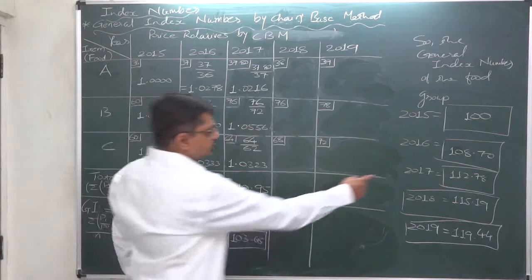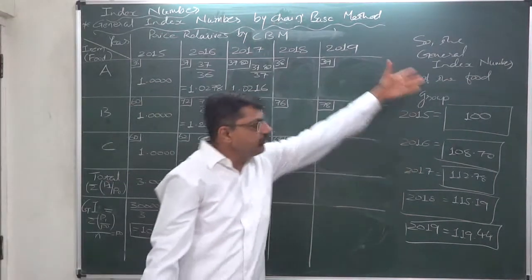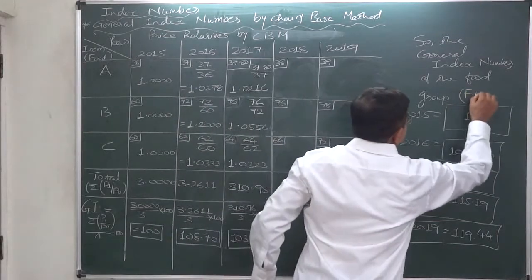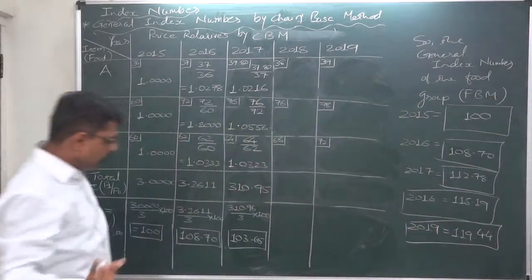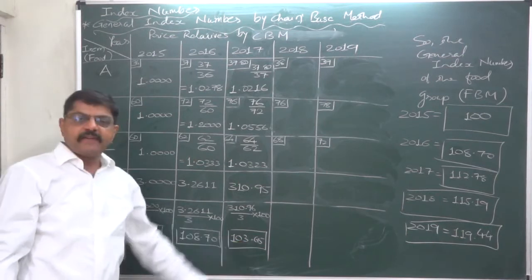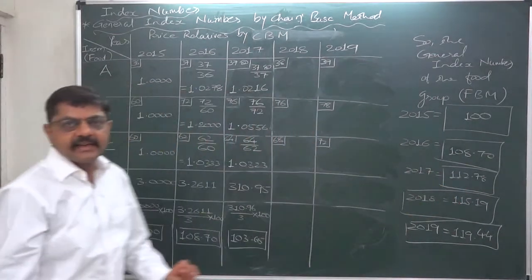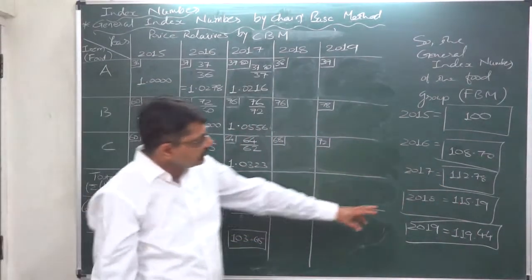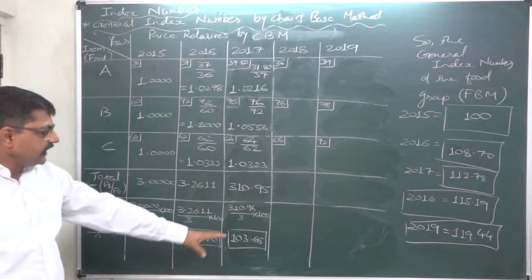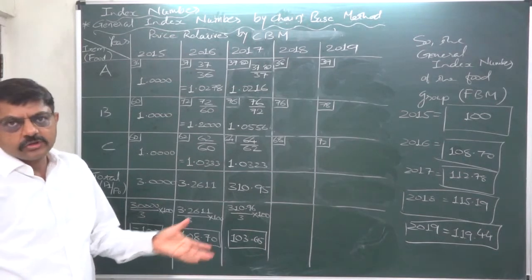In case of fixed base method it was 112.78, so we can compare easily. The average price rise comes to only 3.65% in chain base method, as compared to 12.78% in fixed base method. This is because in fixed base all years are compared to 2015, whereas in chain base the reference point has changed — the base has changed, so the relative change has also changed.